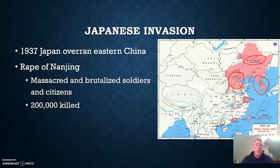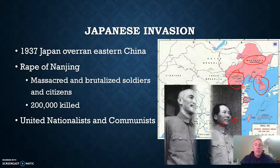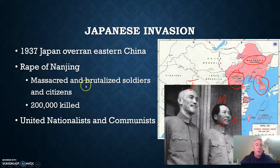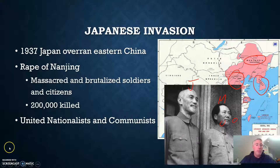The Rape of Nanjing is still a sore point in Chinese-Japanese relations to this day. But this foreign invasion did unite the nationalists and the communists — here's Mao and here's Zhang — because it united them against a common enemy. The enemy of my enemy is my friend, and they would eventually join forces with the Allies once World War II became a global war. But as we'll discuss in a later chapter, that alliance would not last long. That wraps things up for China, and we'll talk about Japan in the next one.